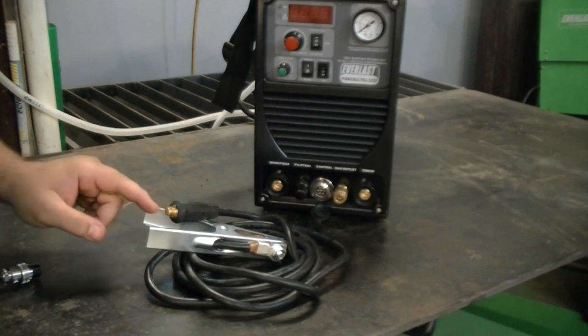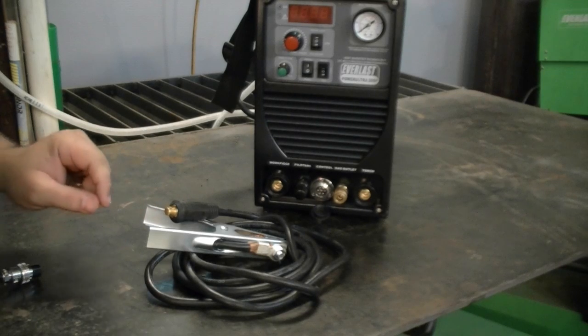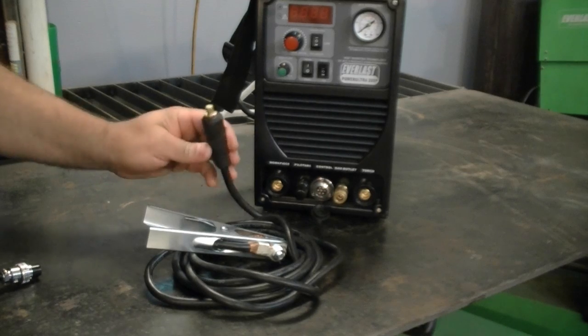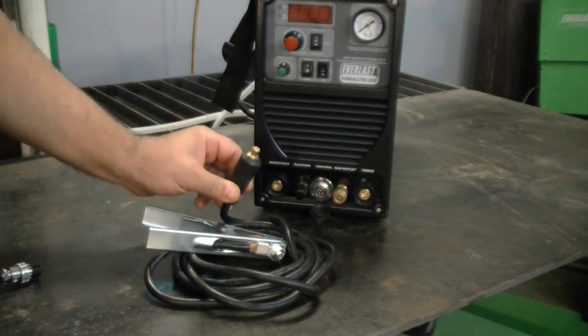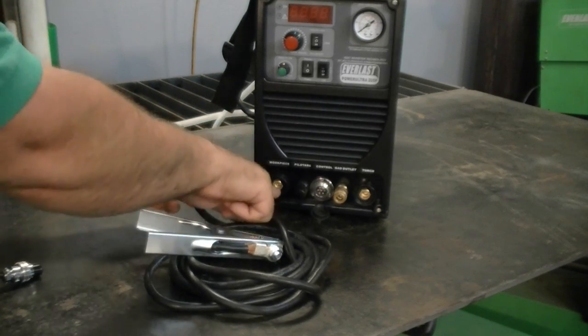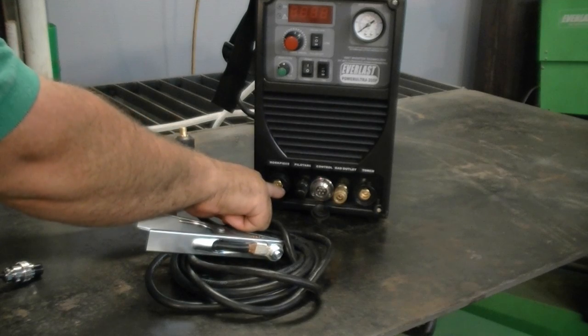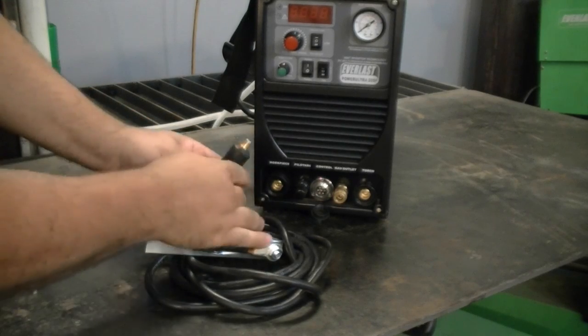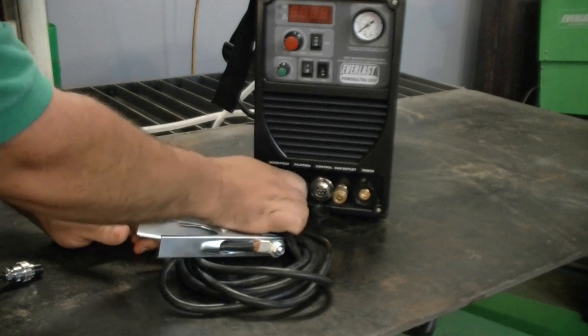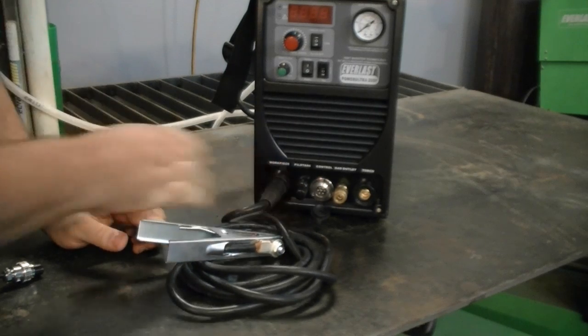So that you don't forget, it's a good practice to hook the work clamp up first. Now simply take your connector here. You're going to have a little tab there. You're going to have a recess in the hole here. Simply line them, stick it in, and give it about a three-quarter turn until it's tight.